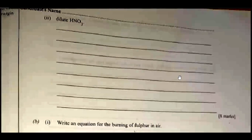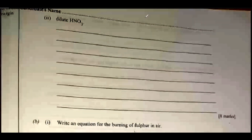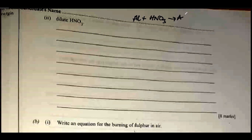We are told to describe how iron and aluminium react with HNO₃. Aluminium reacts with dilute HNO₃ to form aluminium nitrate, ammonium nitrate, and water.